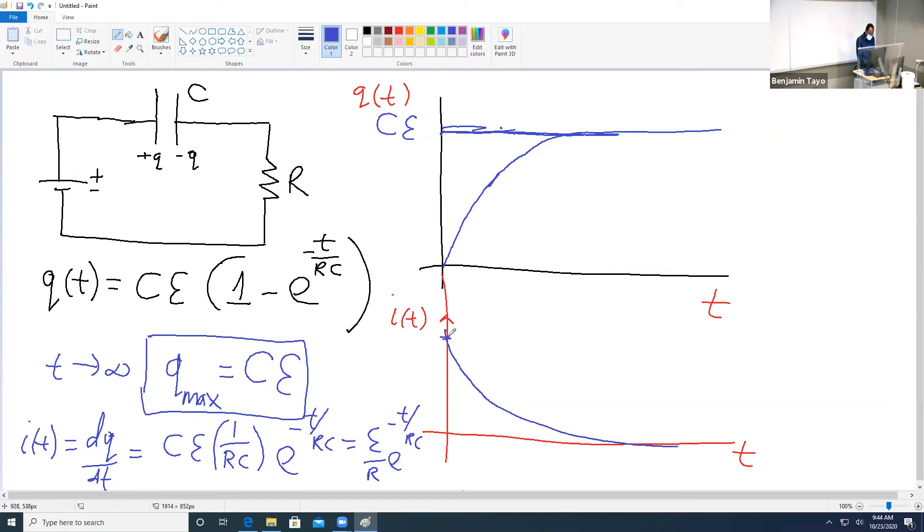So the current is going to start from some maximum value here which is equals to ε over R.